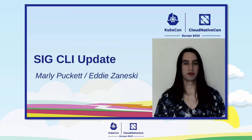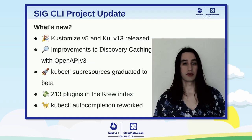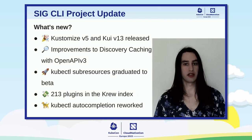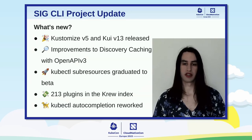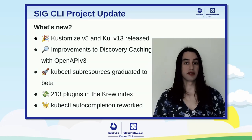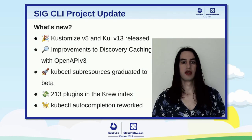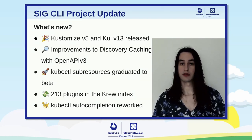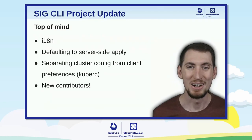Hi everyone. I am Marley Puckett, and this is the SIG CLI project update. In 2022, we saw a Kustomize v5 and CURI 13 release. We also saw improvements to discovery caching by utilizing OpenAPI v3. The kubectl subresources flag was also graduated from alpha to beta. The kubectl plugin index grew to 213 plugins. And finally, kubectl auto completions were reworked such that they're much more performant. Thanks, Marley.